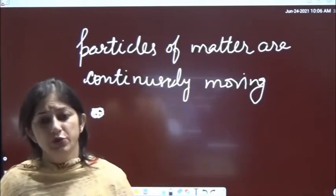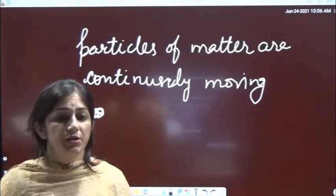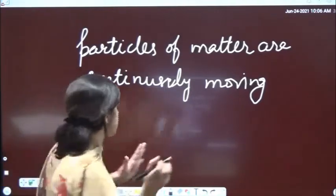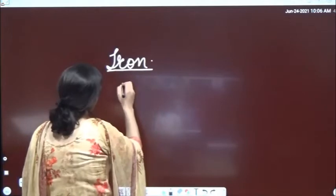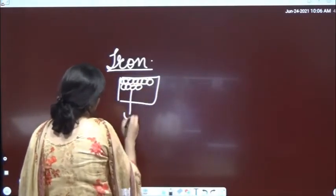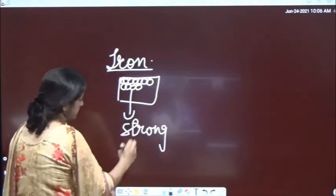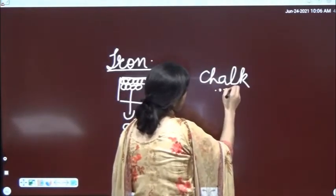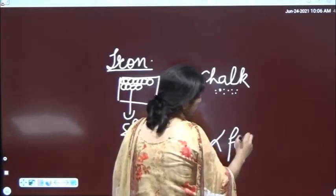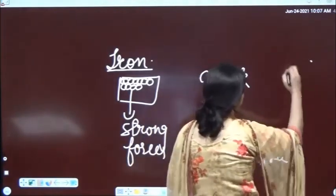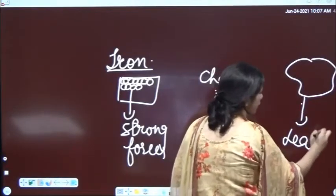Rubber band will easily stretch. Chalk requires a little bit more energy. But the iron piece requires a lot of energy. It means that the particles of iron have very strong forces of attraction. When you have the chalk, the particles have a little bit of force, and the rubber band has the least forces of attraction.